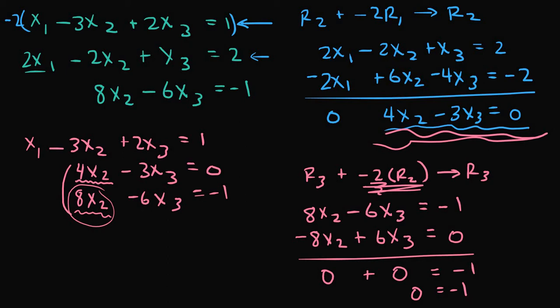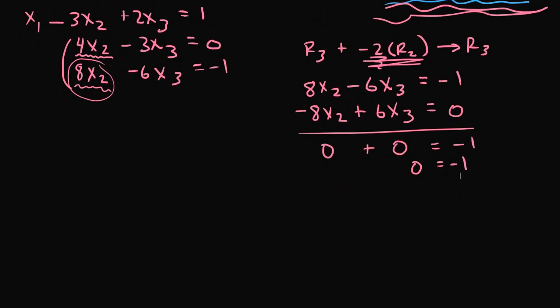Uh-oh. So if we scroll down and we try to write this equivalent system, we have x1 minus 3x2 plus 2x3 is equal to 1, 4x2 minus 3x3 is equal to 0, and we have 0 equals negative 1. Well, this is interesting because I'm pretty sure 0 does not equal negative 1. So this is a false statement. It's a false equation. It doesn't work. 0 does not equal negative 1.